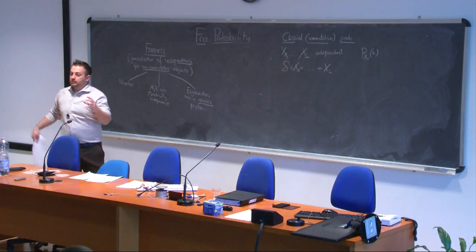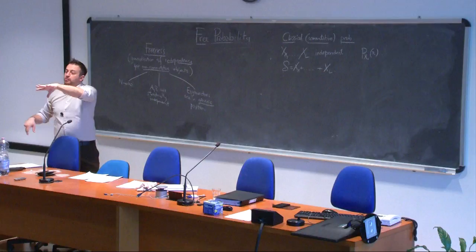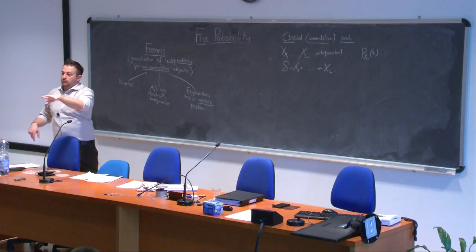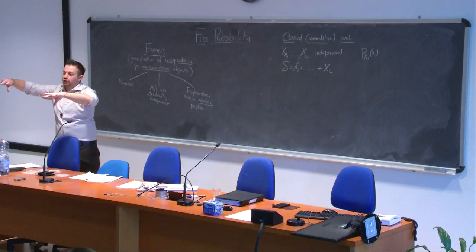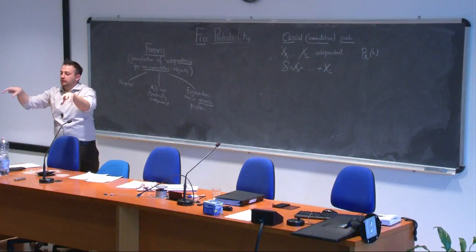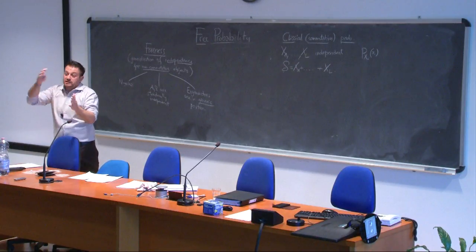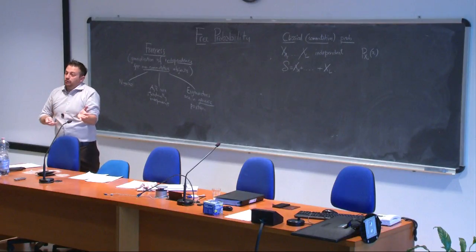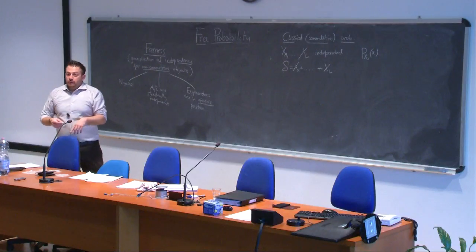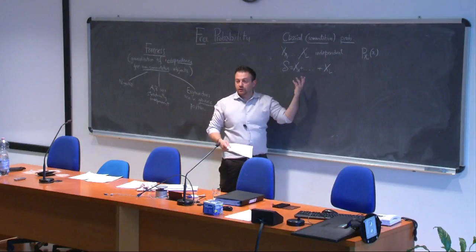The main object in this game is what we have already seen at the beginning of the course: the resolvent, or for a funny reason it is nicer here to call it the Green's function. We can rewrite it as ∫ dλ ρ_A(λ) / (z − λ). We can also define the Blue's function as the functional inverse of the Green's function: G_A(B_A(z)) = B_A(G_A(z)) = z.